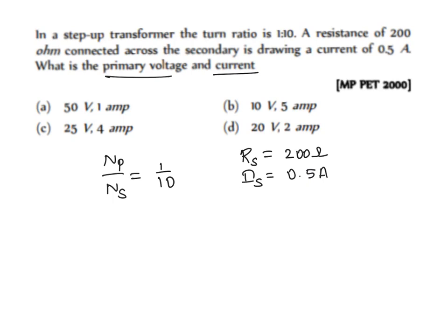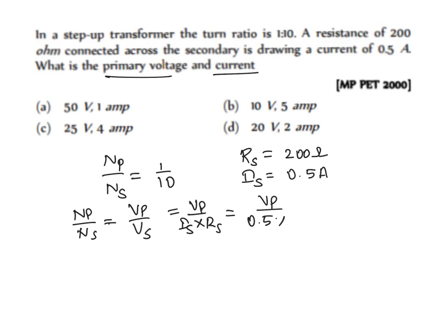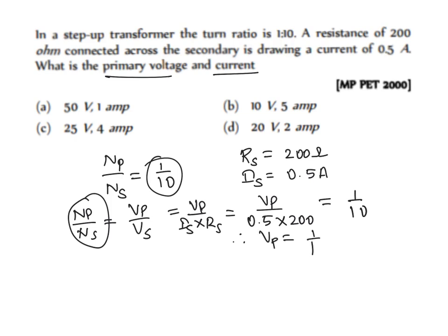To find the primary voltage, we use NP/NS = VP/VS. First, find VS using Ohm's law: VS = IS × RS = 0.5 × 200 = 100 volt. Then, VP/100 = 1/10, so VP = (1/10) × 100 = 10 volt. Only option B gives 10 volt, so that is correct.